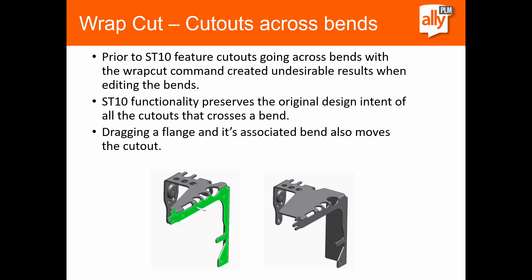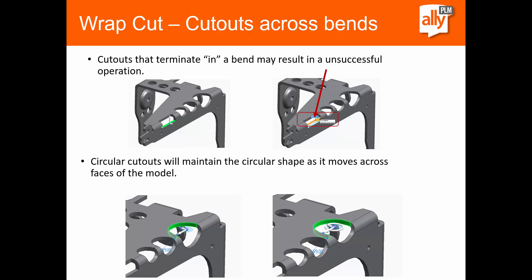In the sheet metal environment, some new options here with cutouts across bends. In the past when you tried to edit those bends, you'd get results that you didn't want. But now in ST10, we preserve that original design intent and allow you to create those cutouts across the bend and be able to edit them — drag the flanges and things like that. Also, if you come in and try to move a cutout up past the bend, it's going to result in an unsuccessful operation, which makes sense. But you can grab a circular cutout and shift it across the bend as well.